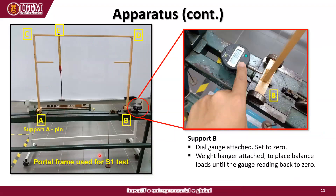This is the setup for the portal frame. Support A is a pin, and support B is a roller. Point C and point E are marked on the frame, as is point D. At support B, the dial gauge is attached and you need to set it to zero by pressing the zero button. The weight hanger is also attached to support B — this is where we place the balancing load so that the gauge reading returns to zero.